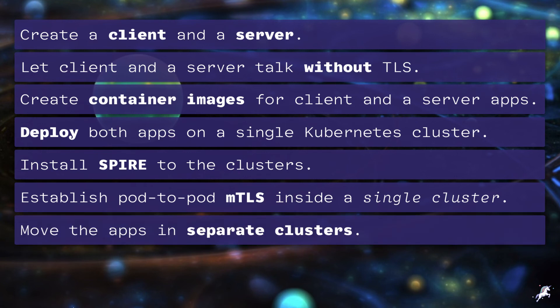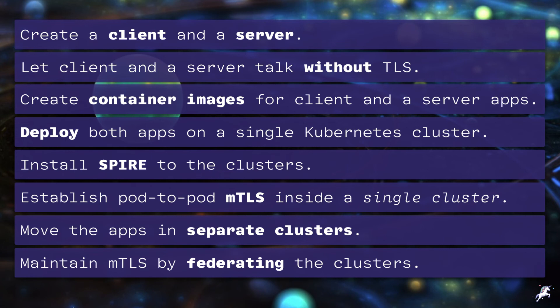Then we'll establish a pod-to-pod secure MTLS communication inside a single cluster to start with. After that, we'll move the client application from one cluster to the other, so each cluster will have a single application. We'll then reestablish MTLS secure communication between the greeter client and greeter server pods, now living on two different clusters, by federating the two Spire servers on each cluster.